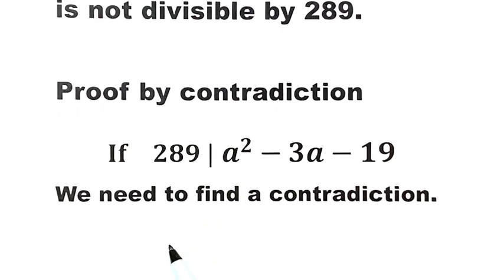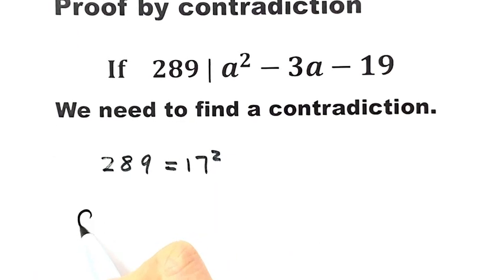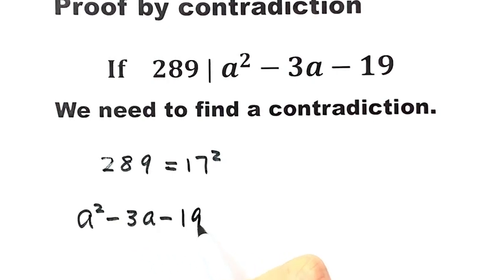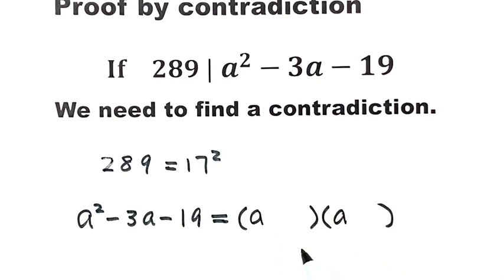First, we notice that 289 equals 17 squared. Next, we're going to rewrite the expression a squared minus 3a minus 19. We want to put it in the form of a product of two factors, since we have a squared minus 3a. So we write (a + ?) times (a + ?) and figure out the two missing numbers.